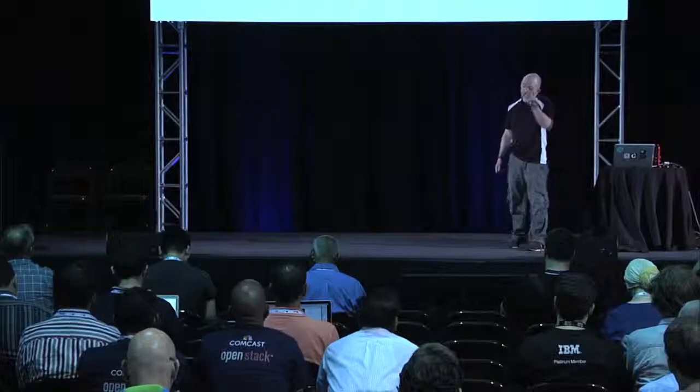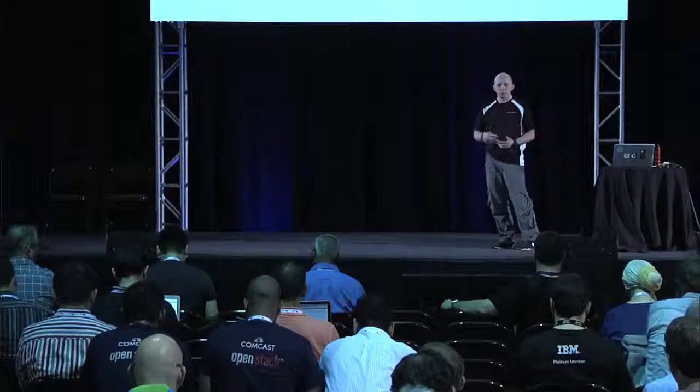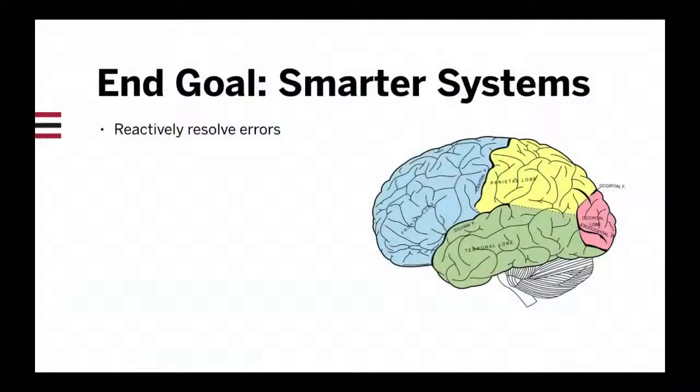The end goal is to make our cluster, or at least the management piece of our cluster, a little bit smarter — the pieces that are sitting there watching it daily, 24 hours, when we can't. One of the things we want to start with is how to reactively resolve issues that might crop up: some of these smaller issues on a daily or semi-daily basis. It takes time to get automation right, and not all of us have that time.